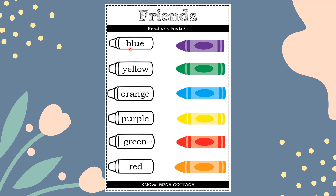Look at the first one. Can you read this? Very good — blue. Now we have to find the blue crayon. Did you find it? Great job, here it is. The next one is yellow. Now you have to find the yellow crayon. Did you find it? Yes, here it is. The third one is orange. Can you find the orange crayon? Great job, here it is.